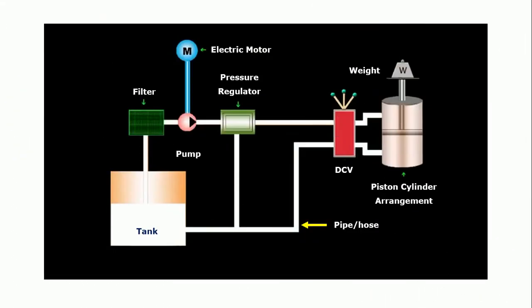Students, let me explain the working principle of fluid power system. As we discussed, there are different components present in the fluid power system, starting from reservoir, filter, pump, motor, pressure regulator or pressure control valve, direction control valve, and piston cylinder arrangement. As we switch on the electric motor, the pump will start rotating, due to which suction pressure will be created at the entry of pump.